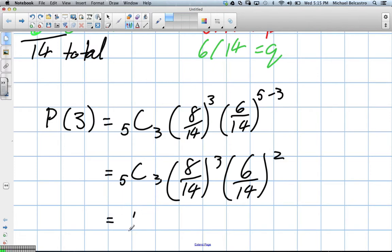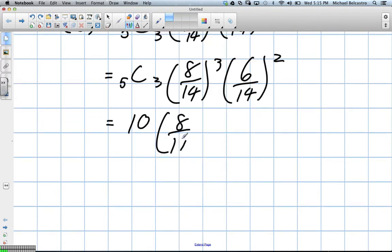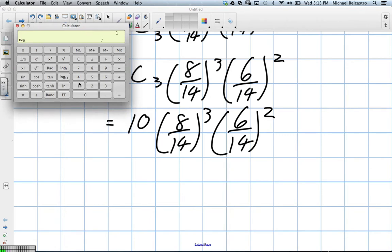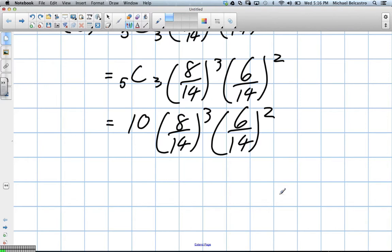What does our combination give us there? Ten. So we have ten multiplied by these values here, and we can probably do that all in one step on our calculator. We'll do that right now. We take our calculator out. That's eight divided by 14 to the power of three, times six divided by 14 to the power of two. I'm not sure if I can do that in one step on my calculator.